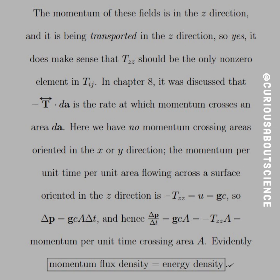The momentum of these fields is in the z direction and is being transported in the z direction — so yes, it makes sense that T_zz should be the only non-zero element in the Maxwell stress tensor. From Chapter 8, the negative tensor dotted with dA is the rate of change at which momentum crosses some area dA. We have no momentum crossing areas oriented in the x or y direction. The momentum per unit time per unit area flowing across a surface oriented in the z direction is negative T_zz, equal to u, which equals g times c — momentum density times c.